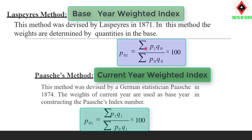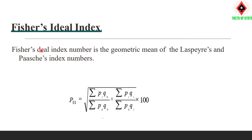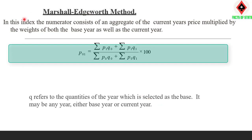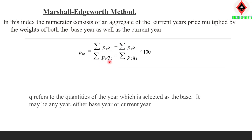Laspeyres (1871): Formula is (Sigma P1·Q0 / Sigma P0·Q0) × 100. Paasche, a German statistician (1874): Formula is (Sigma P1·Q1 / Sigma P0·Q1) × 100. Fisher Ideal Index: It is the geometric mean of Laspeyres and Paasche — square root of (Laspeyres × Paasche) × 100. Marshall-Edgeworth (two statisticians): Formula is (Sigma P1·Q0 + Sigma P1·Q1) / (Sigma P0·Q0 + Sigma P0·Q1) × 100, where Q refers to quantities of the selected base year or current year.